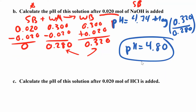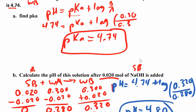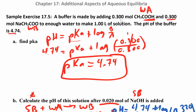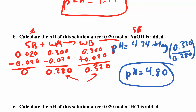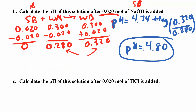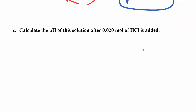This pH makes sense because originally, when the buffer was made with 0.3 moles of acetic acid and 0.3 moles of sodium acetate, the pH was 4.74. When you added the base, the pH went up a little bit and became more basic — which makes sense. Make sure when comparing pH values you're looking at the pH and not the pKa. In this case the pKa happened to equal the pH, so be careful.